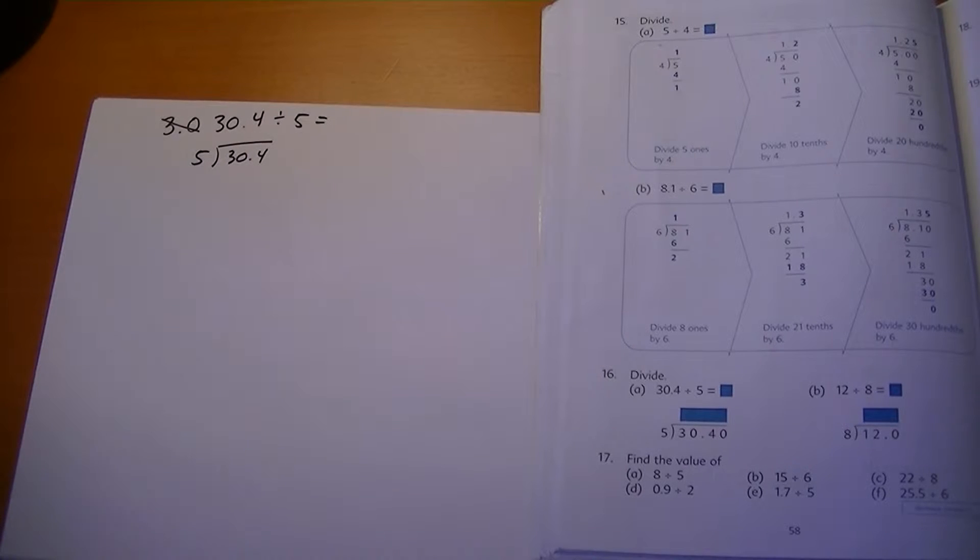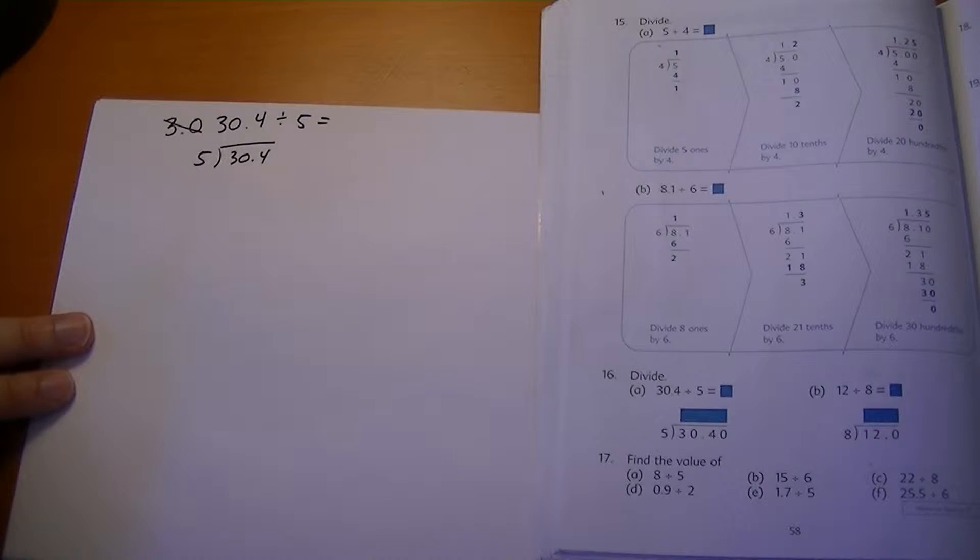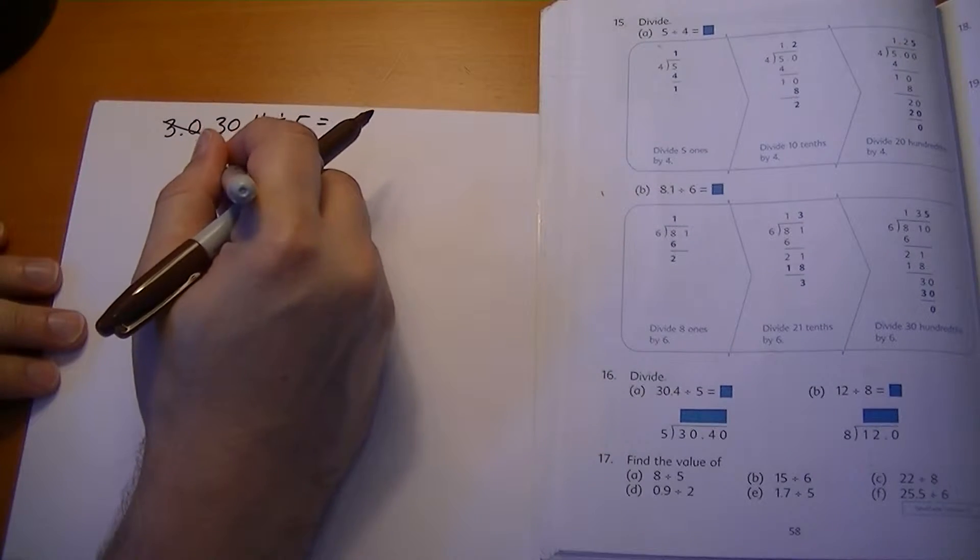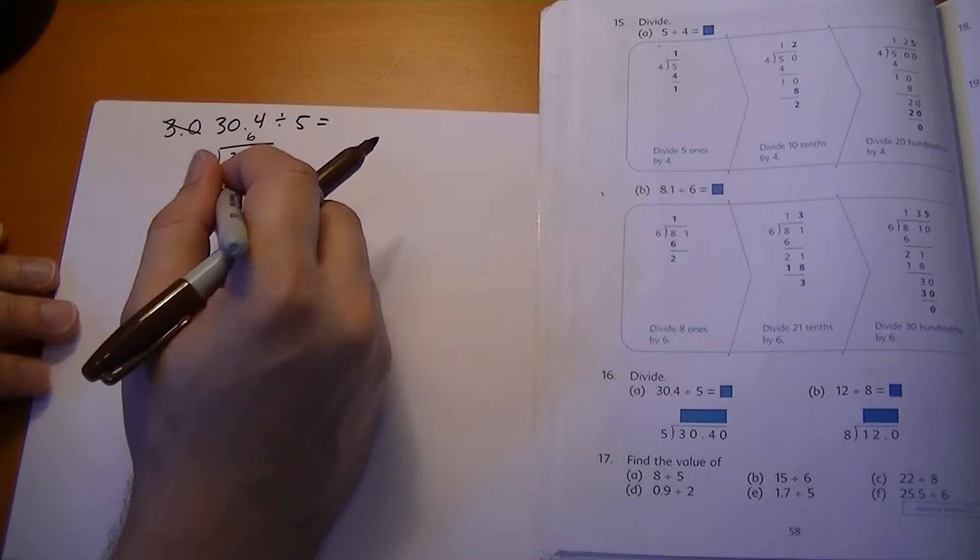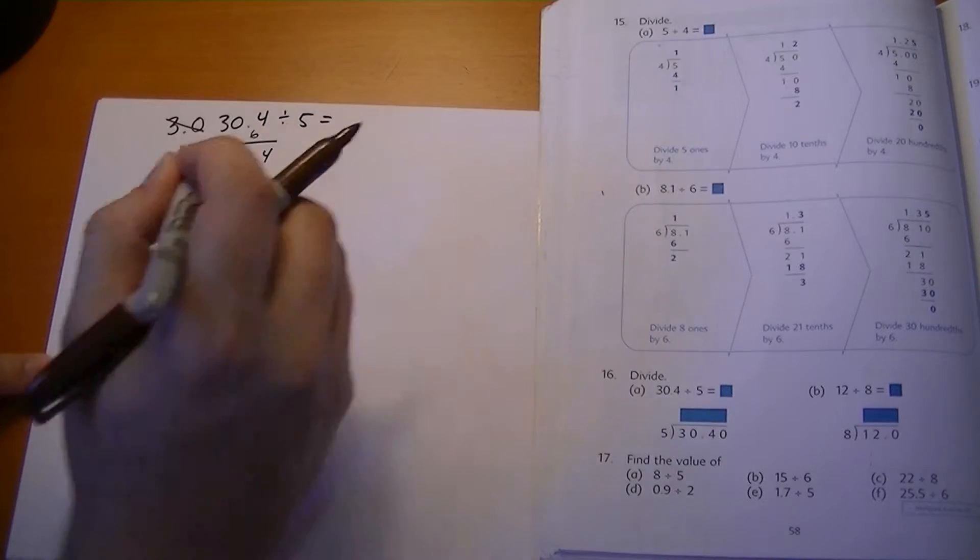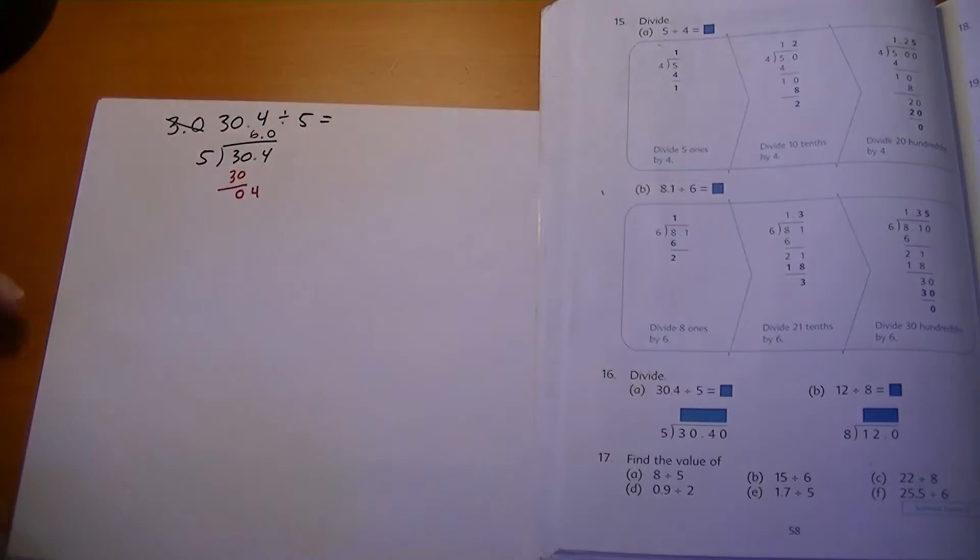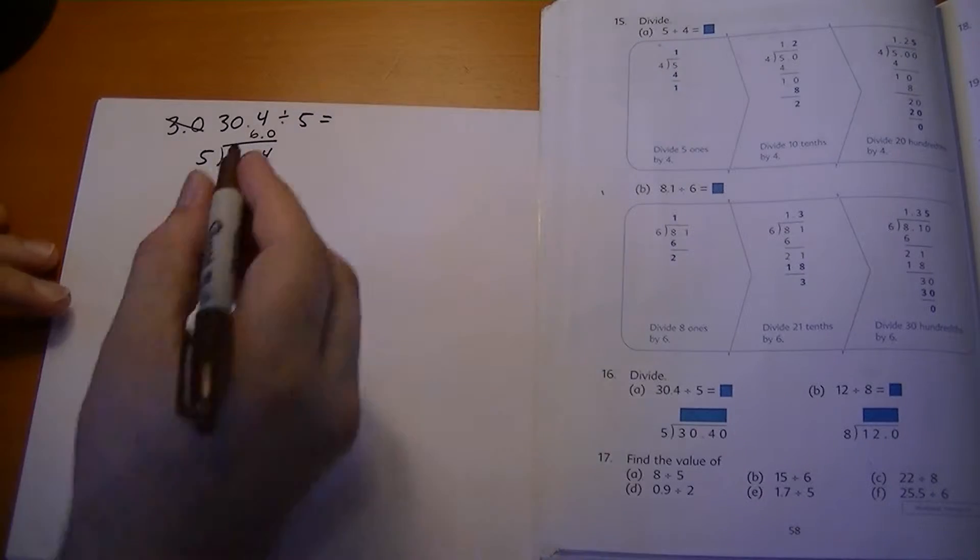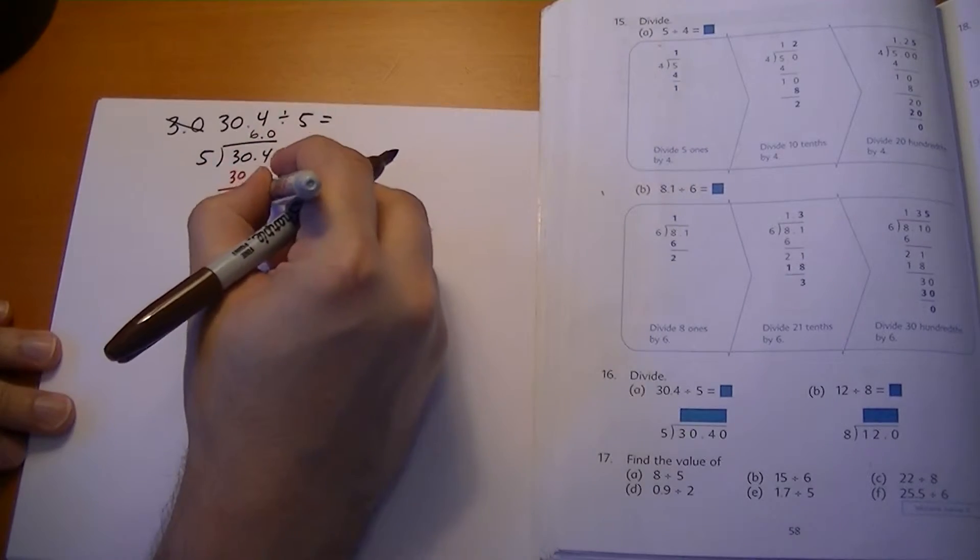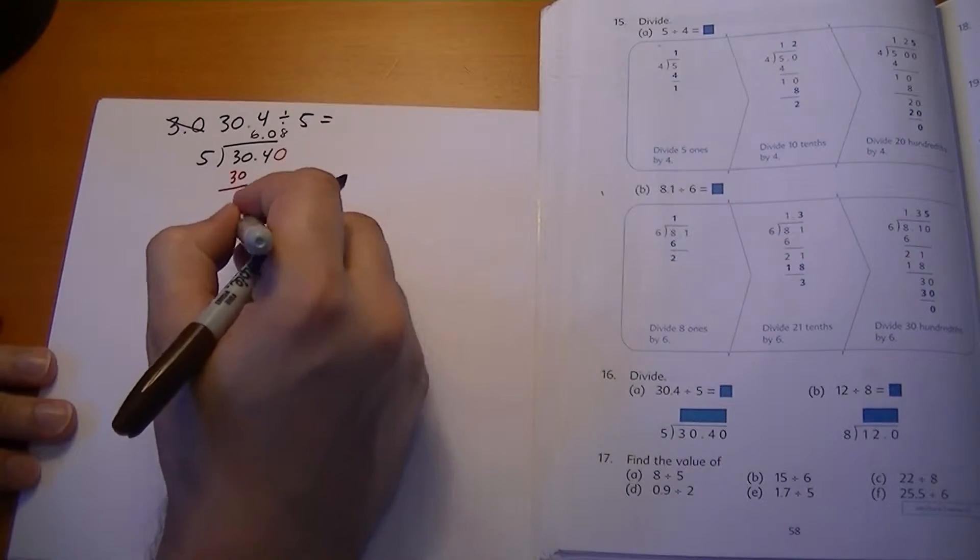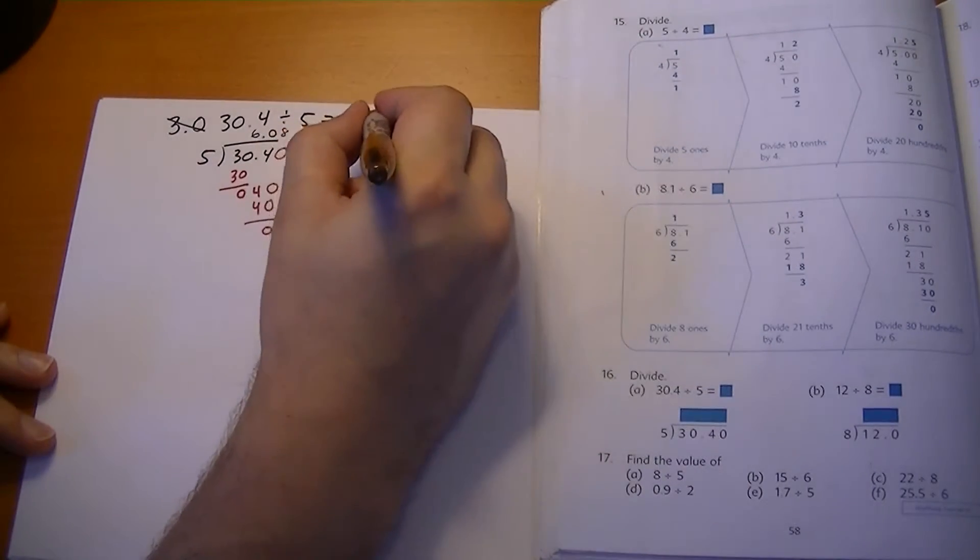Five goes into three how many times? If I have three apples and five people, zero times. We're not going to write a zero. What about five goes into thirty? Six times. Six times five is thirty. Thirty minus thirty is zero. Bring down the four. Five goes into four how many times? Zero times. So we've got to bring this point up. So it's 6.0. We have a remainder of four. What do we do now? We add a zero. And that zero comes down here. Five goes into forty how many times? Eight times. And forty minus forty is zero. We're done. The answer is six point zero eight.